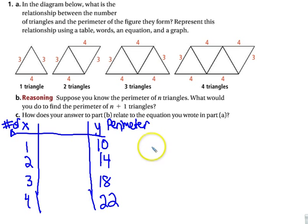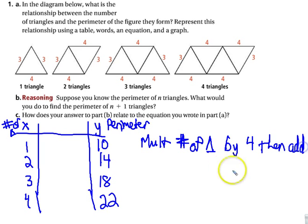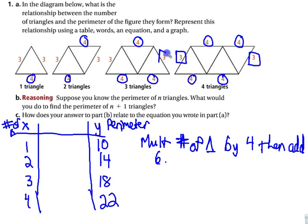Alright. Now, if we take in words, we multiply number of triangles by 4, and then add 6. You'll notice that there's one 4. When there's two triangles, there's two 4s. When there's three triangles, there's three 4s. When there's four triangles, there are four 4s. There are always 6 on either side.